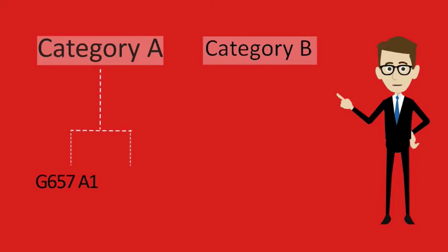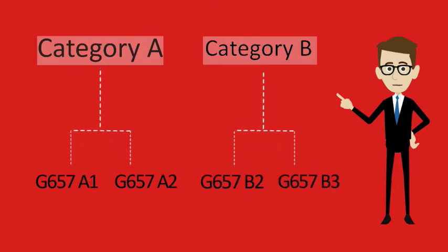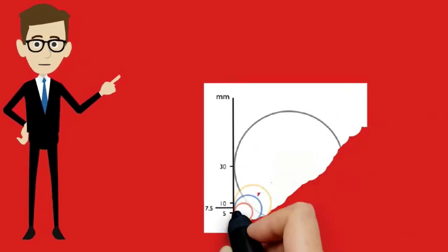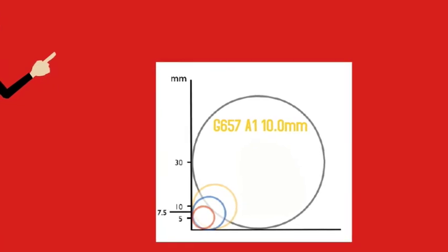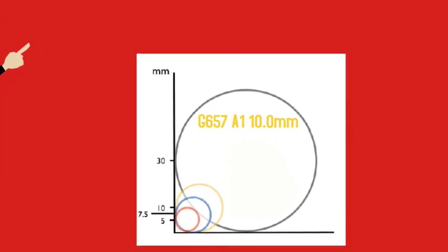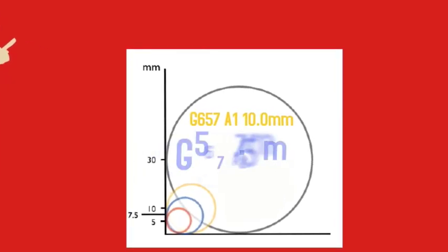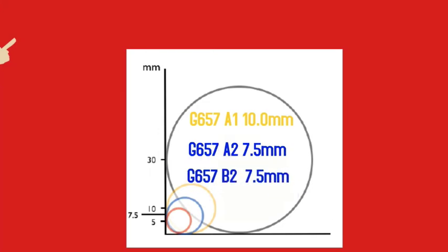G657-A1 and G657-A2, G657-B2 and G657-B3. These subcategories have the following minimum specified bend radius: G657-A1, 10.0 mm; G657-A2 and G657-B2, 7.5 mm; G657-B3, 5.0 mm.